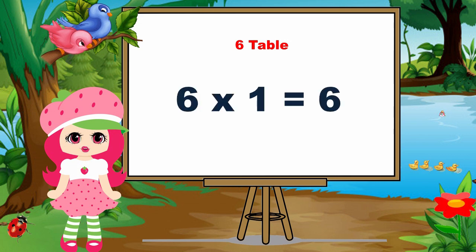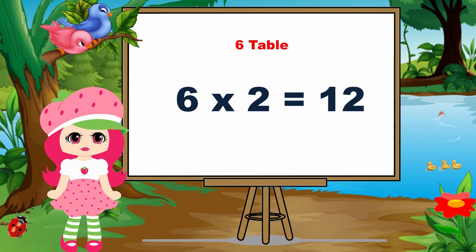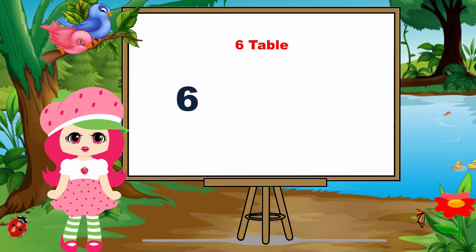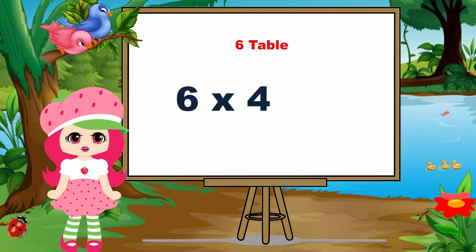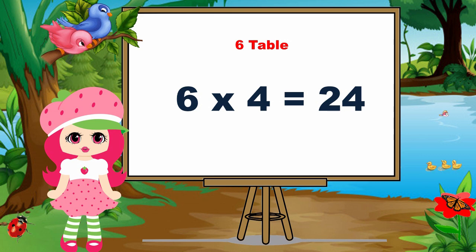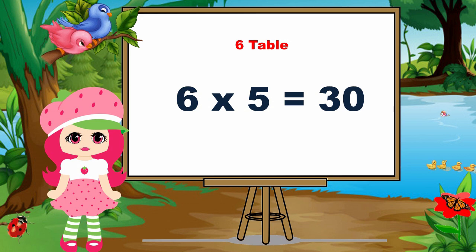Six ones are six. Six twos are twelve. Six threes are eighteen. Six fours are twenty-four. Six fives are thirty.